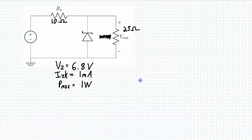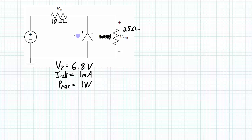Okay, here is an example circuit. It's similar to an example I've done before, but this time instead of having a variable load, we have a variable source. And what we're looking for is what is the range of voltages we can have from the source that will still keep this Zener diode regulating without putting too much current through it to cause it to burn out or have a shorter life expectancy than planned.